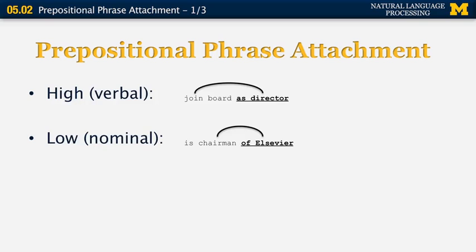There are two types of prepositional phrase attachment. The first kind is called high attachment, or verbal attachment — that's when the prepositional phrase 'as director' attaches to the nearest verb, in this case 'join.' The second is low attachment, or nominal attachment — 'of Elsevier' modifies 'chairman,' meaning the chairman is associated with Elsevier. Just like in the first example, 'as director' is the way in which the person joined the board; it is not a modification of 'board.'